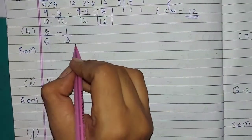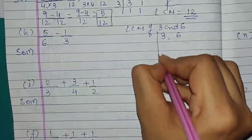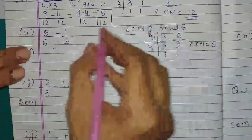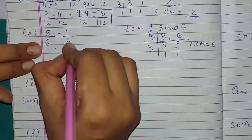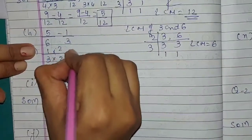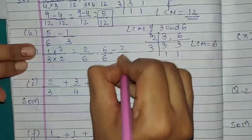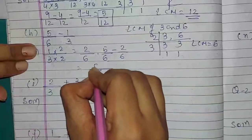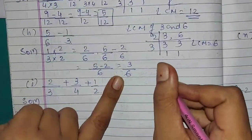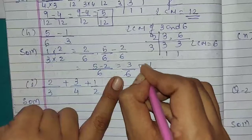Question number H: 5 upon 6 minus 1 upon 3. We take LCM of 3 and 6, which equals 6. Since 5 upon 6 already has denominator 6, we only convert 1 upon 3: multiply by 2 upon 2, giving 2 upon 6. So 5 upon 6 minus 2 upon 6 equals 3 upon 6. Converting to simplest form: answer is 1 upon 2.